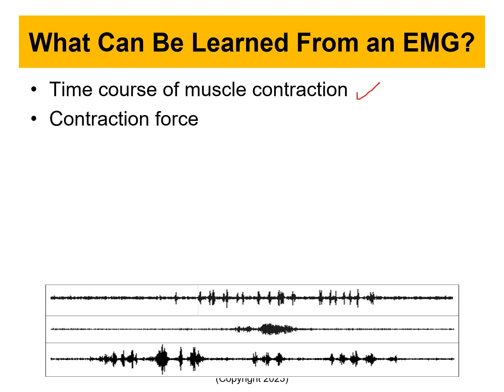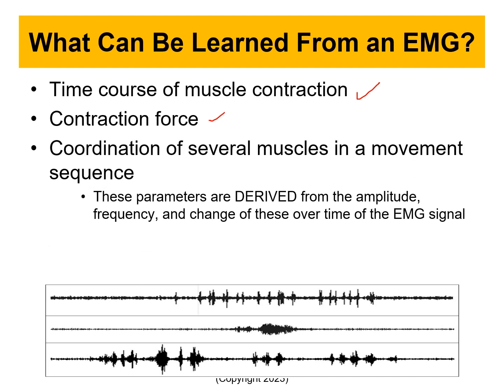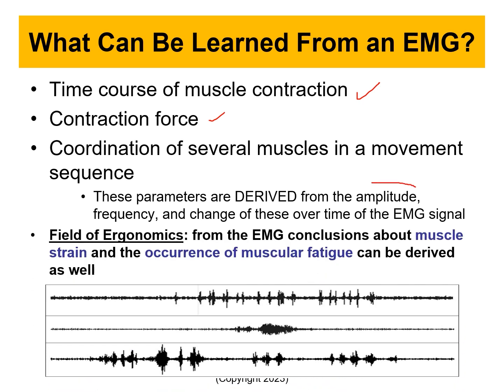The other important thing is contraction force, which can be related indirectly to the EMG activity because there is coupling between the action potential and contraction. We can also look at the coordination of several muscles and movement sequence. These parameters are derived from the amplitude, frequency, and change over time of an EMG signal. This is why a biomedical engineer can be a really good data analyst for big data in healthcare — because we know what those parameters are and how to extract them.